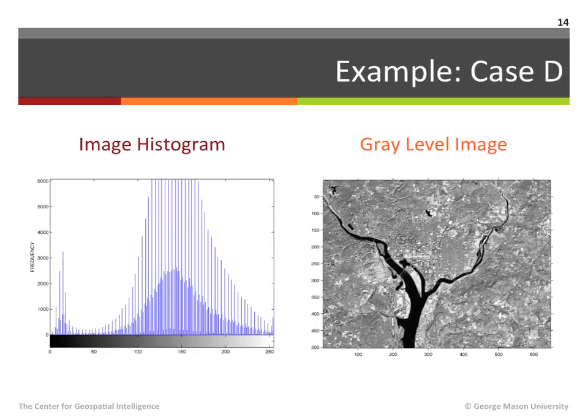Finally, in case D, the image histogram on the left is wide and well spread throughout the dynamic range of the image. As a result, the image on the right is not too bright and offers good contrast. From these examples we can therefore conclude that the examination of the overall shape of the histogram is a valuable tool in determining whether the image is too dark or too bright and whether the image is likely to have good or poor contrast.